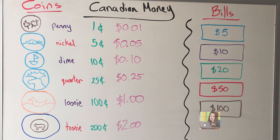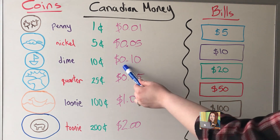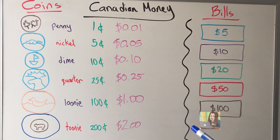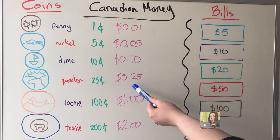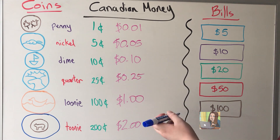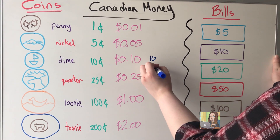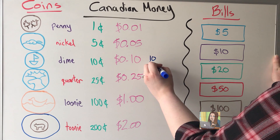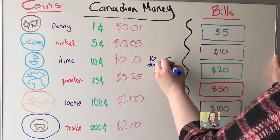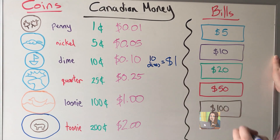Now when we count or look at money, we need to look at our benchmarks. Two really good benchmarks to get used to counting are dimes and quarters — getting used to counting by 10s and 25s. Every dime is worth 10 cents, and every 10 dimes equals one dollar.